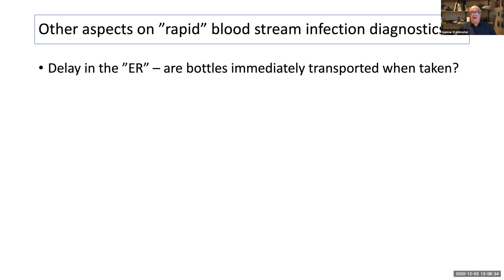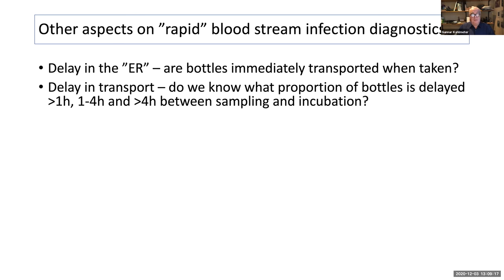There are other aspects of rapid bloodstream infection diagnostics beyond just the AST turnaround time. Is there a delay in the ER? Are bottles immediately transported when taken? When this work began years ago, it was discovered that nurses in the ER were mandated to take blood cultures but not to send them to the lab — that required a doctor's decision. On average, this delayed everything by four hours, which in hindsight was really counterproductive.